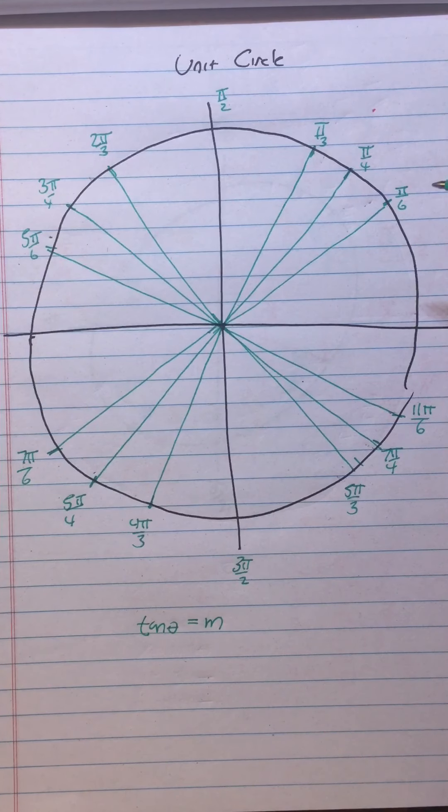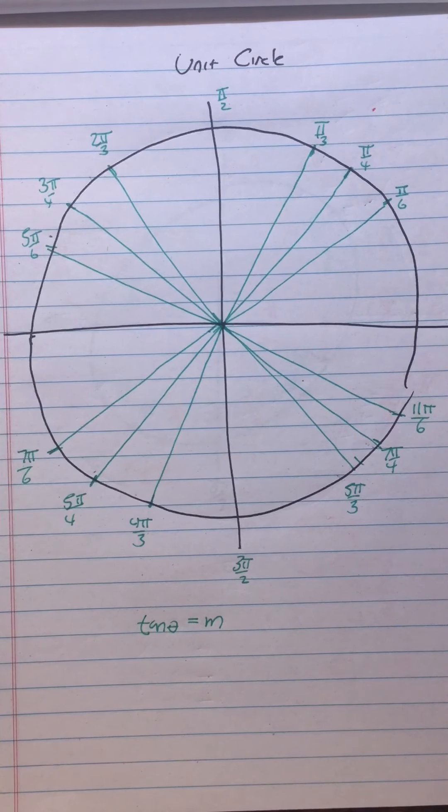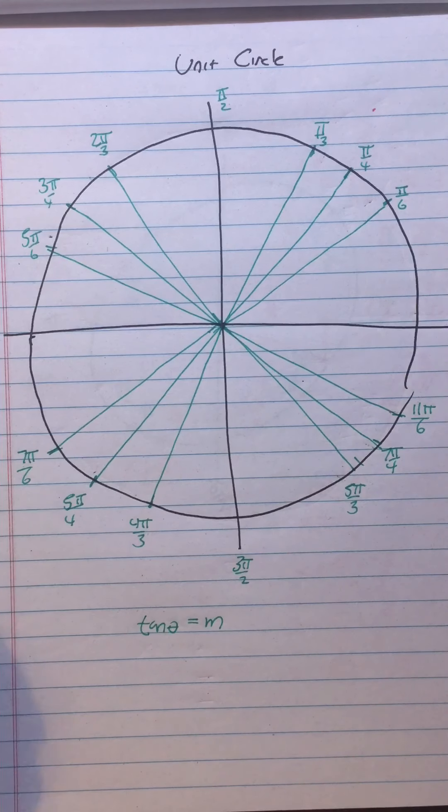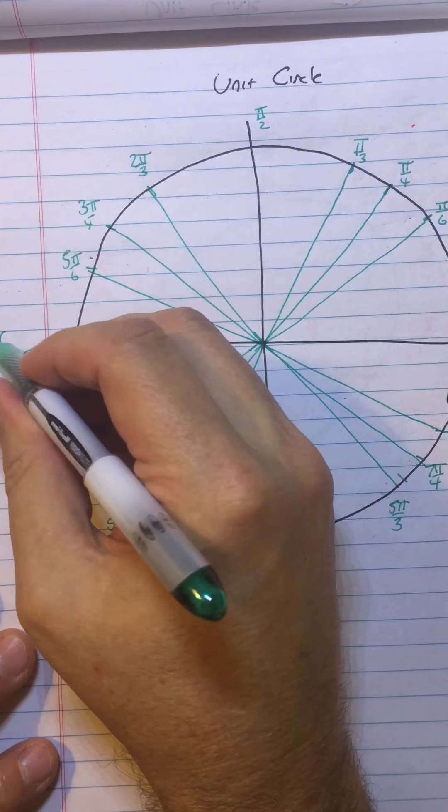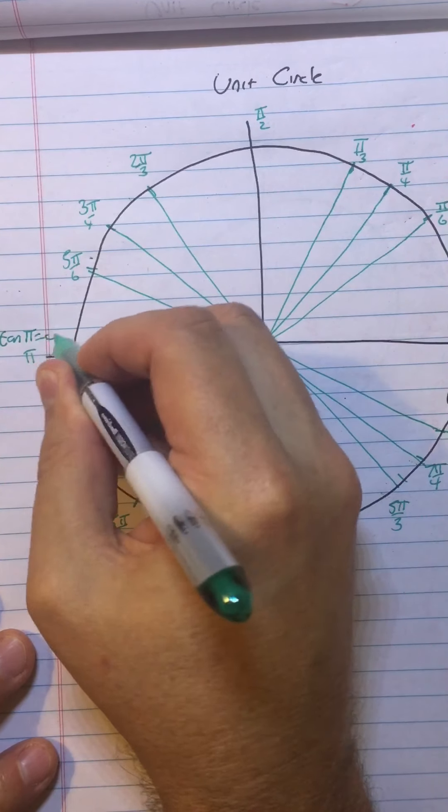So then, first of all, you can get a lot of the tangents very easily, because some of the tangents, the slopes, you can see very easily. So tangent of 0 is 0 because the slope is 0. Tangent of π is 0 because the slope is 0.